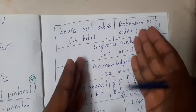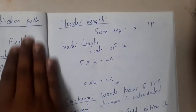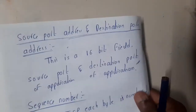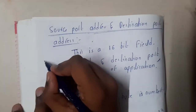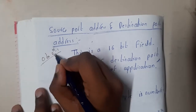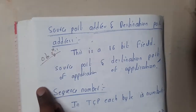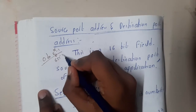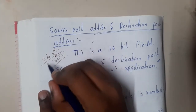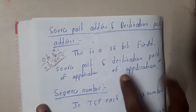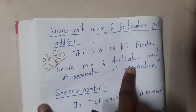The first field is the source port and then destination port. The port number ranges from 0 to 2^16 − 1, which is 65535. So any number from 0 to 65535 could be a port number, which is why we use a 16-bit field. It identifies the source application and the destination application — who is sending and who is receiving.